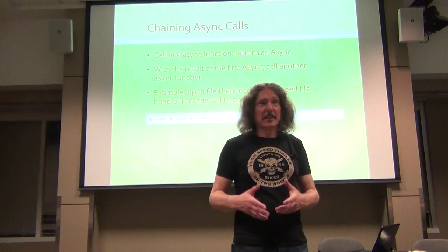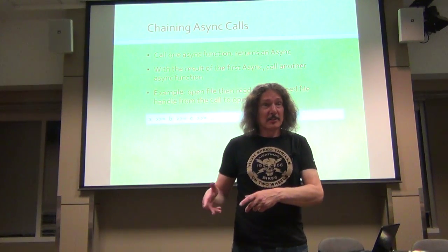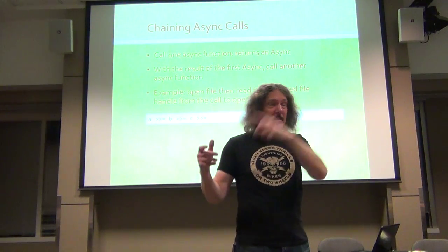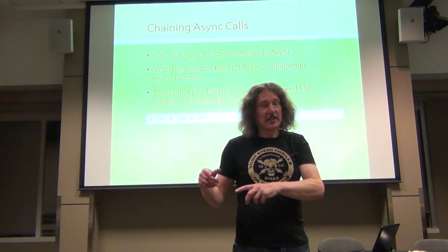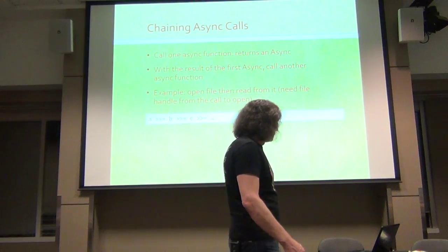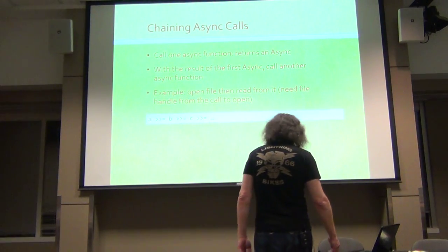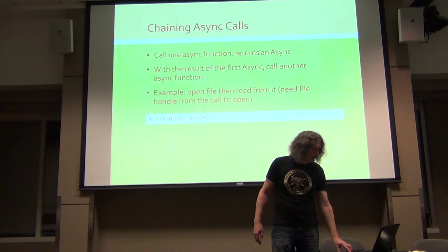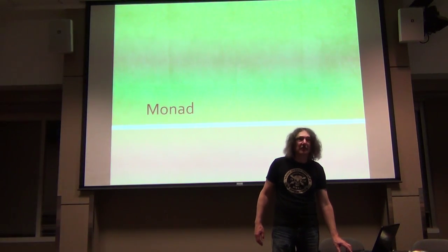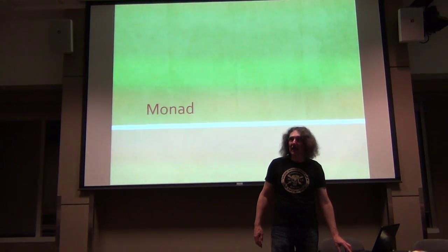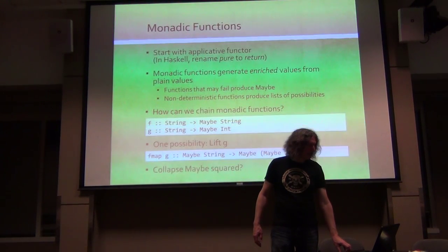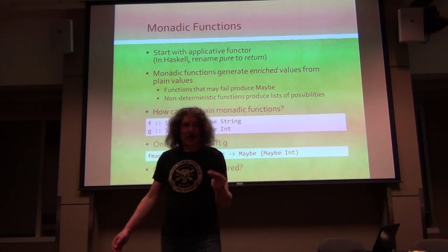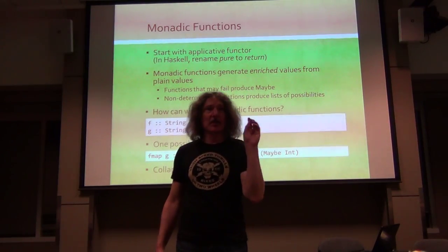Normally what you would do is call the async open, and in the handler when it calls you, call the other function from inside the handler. The handler has to have access to this other function. We want to do it cleanly without the inversion of control. For that, we need the monad.